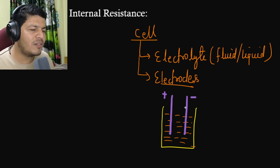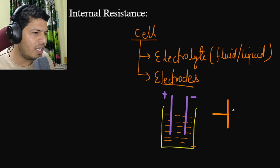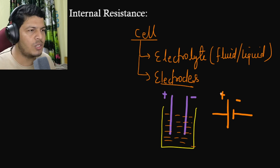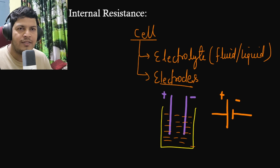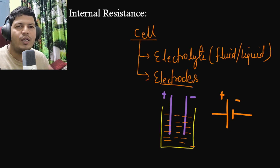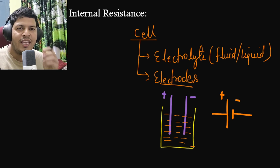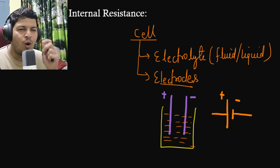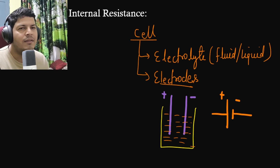Now if you want to draw the electrical symbol of a cell, you already know this from grade 10. One terminal will be negative and the other will be positive. Because of this liquid, there is a flow of ions inside the cell. Due to this movement, there will be some collisions and restrictions, which cause internal resistance. In CBSE board exams, one or two mark questions are always asked from this topic — it is very important for MCQs and one-markers.